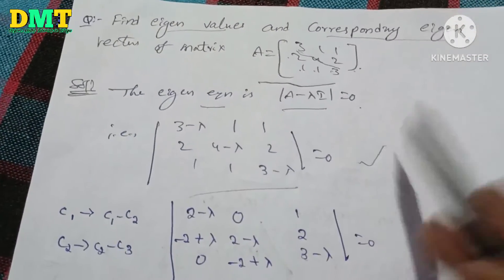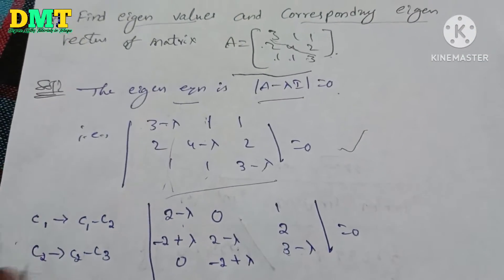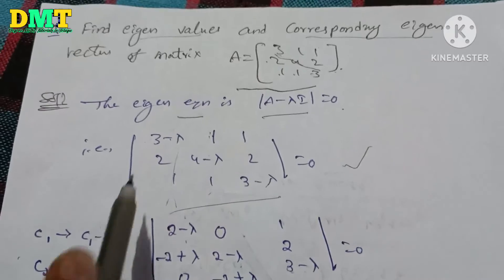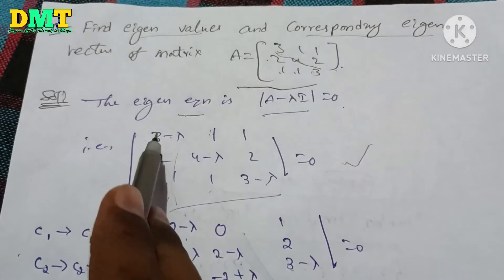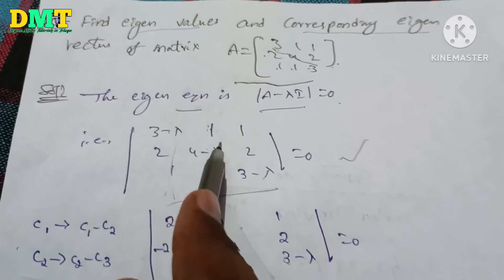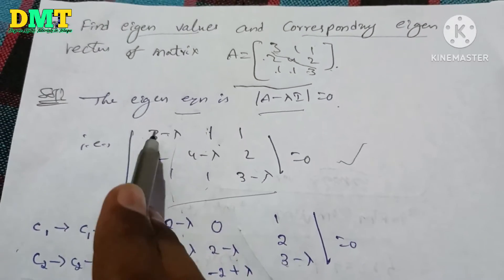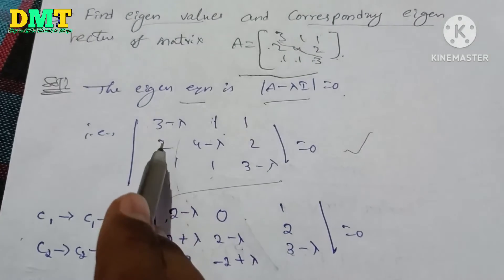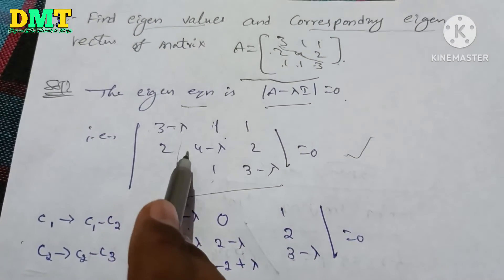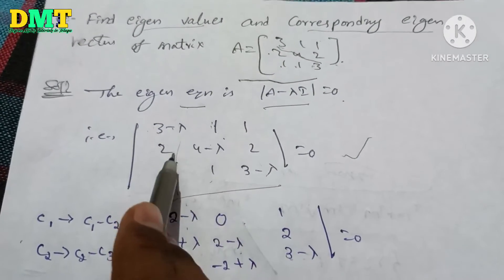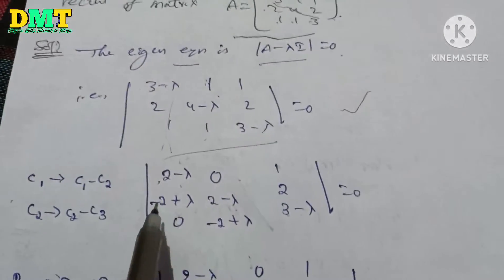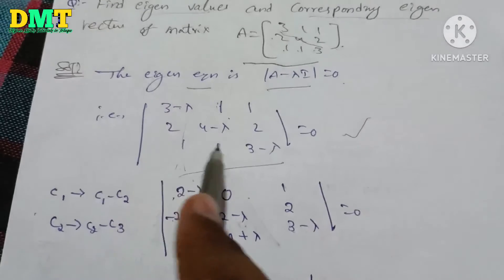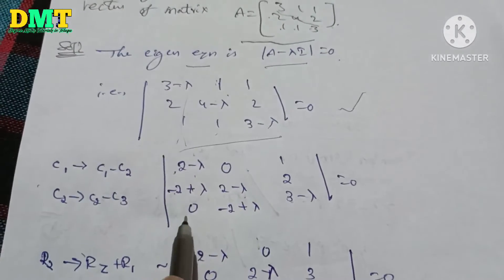Now we will compute the determinant. Column 1 is equal to column 1 minus column 2. So 3 minus 1 is 2 minus lambda. 2 minus (4 minus lambda) is minus 2 plus lambda. 1 minus 1 is 0.